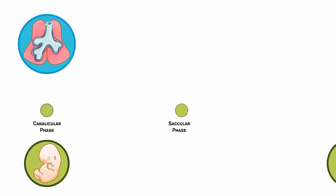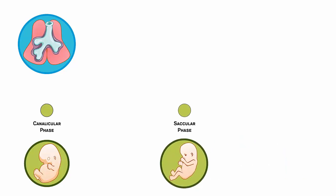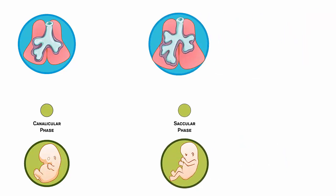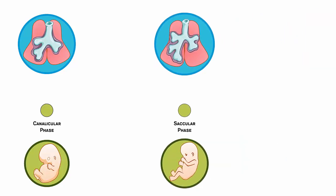Development then moves into the saccular phase, where surfactant — the substance that keeps lung tissue intact — is produced in the lungs. Surfactant also helps during delivery, as it allows the lungs to drain of amniotic fluid and fill with air.